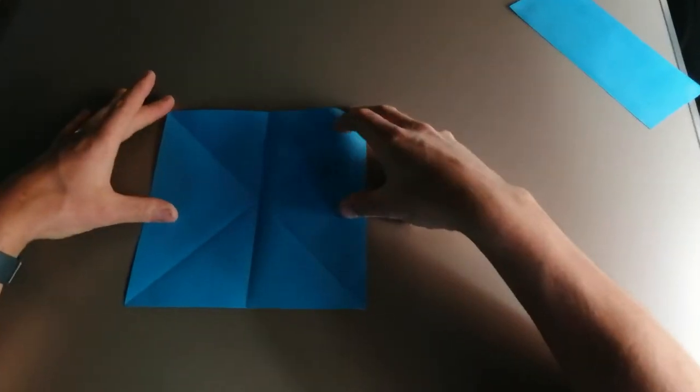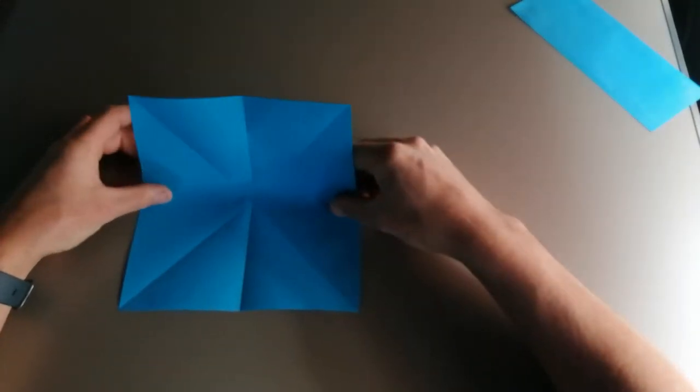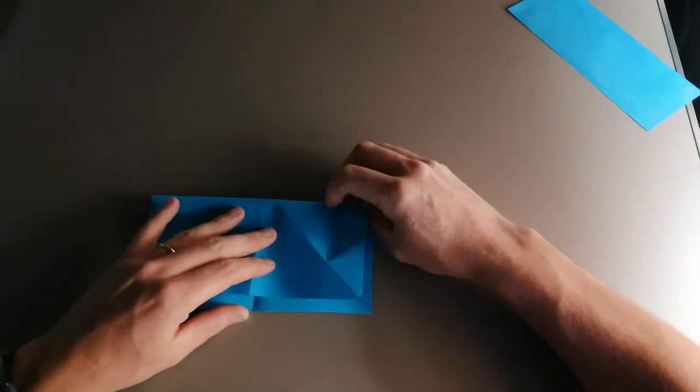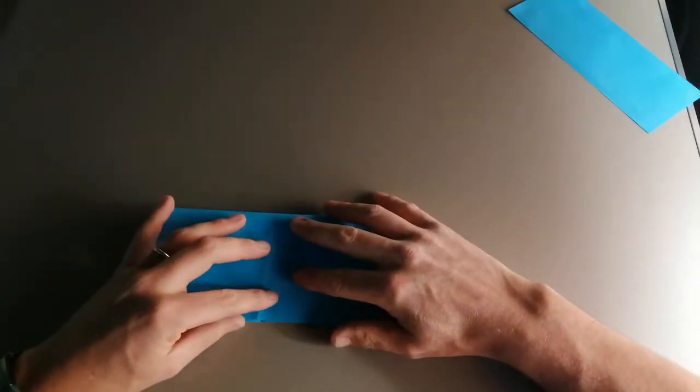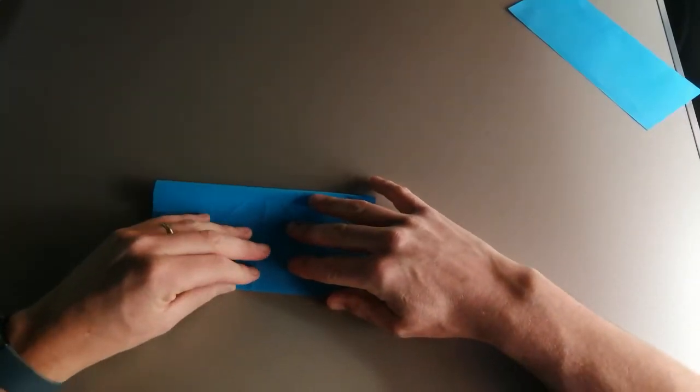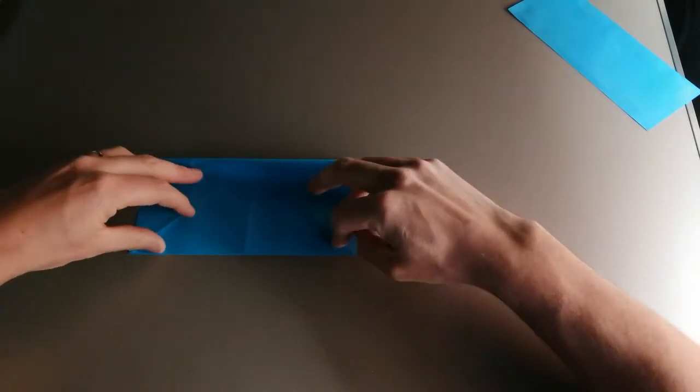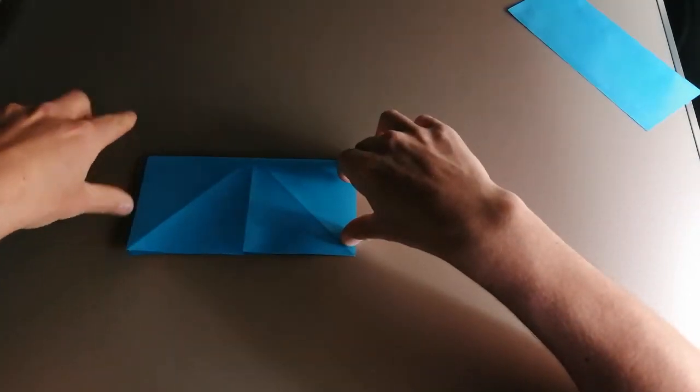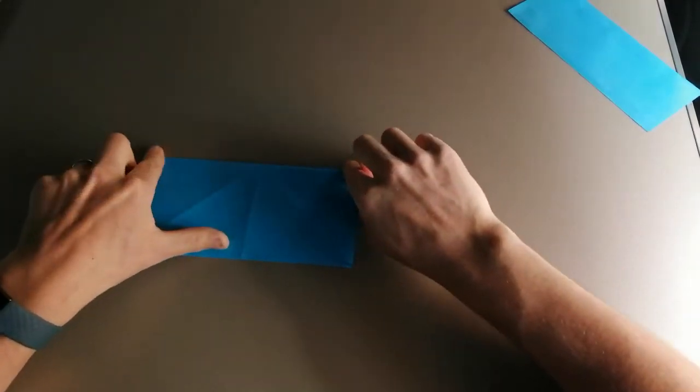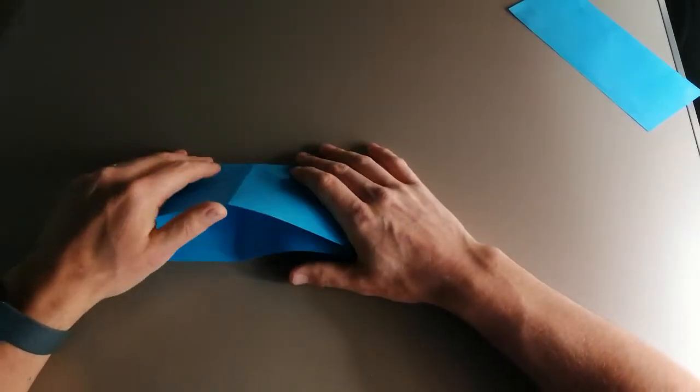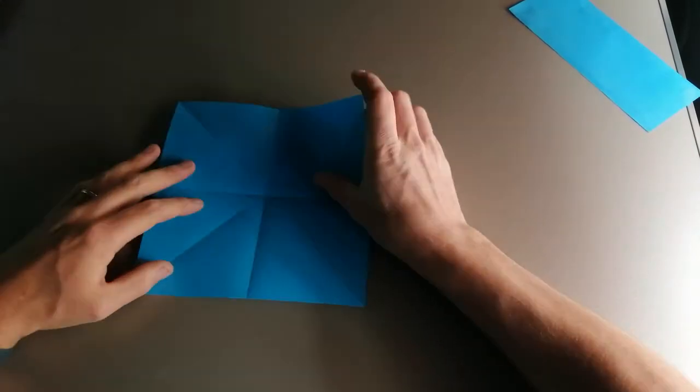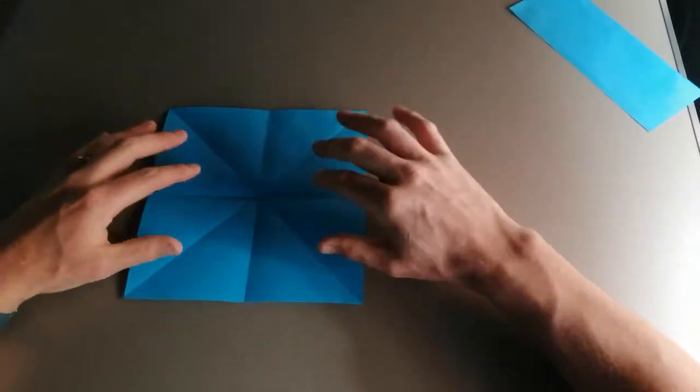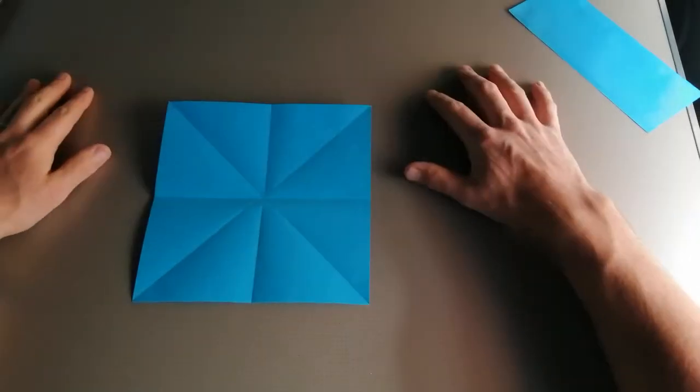And then repeat the same process. Fold the paper in half, aligning all the edges, pressing down firmly to create a crease. Once again, I'm going to open up the piece of paper so you can see that we've got this.